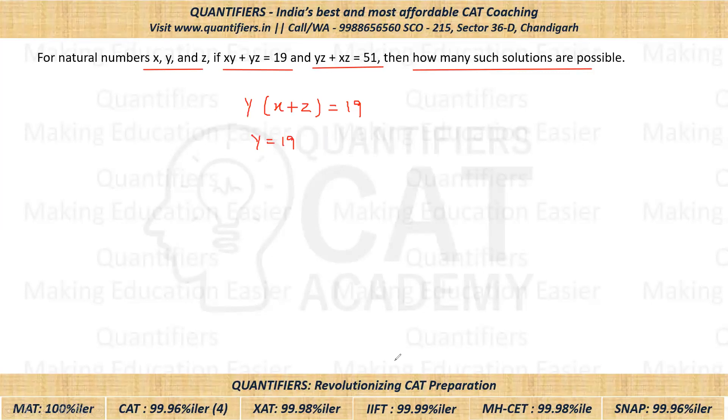So minimum of x plus z has to be 2, right? So the only possibility is that y has to be 1. So if y is 1, we know that x plus z will be equal to 19. I hope this is clear.